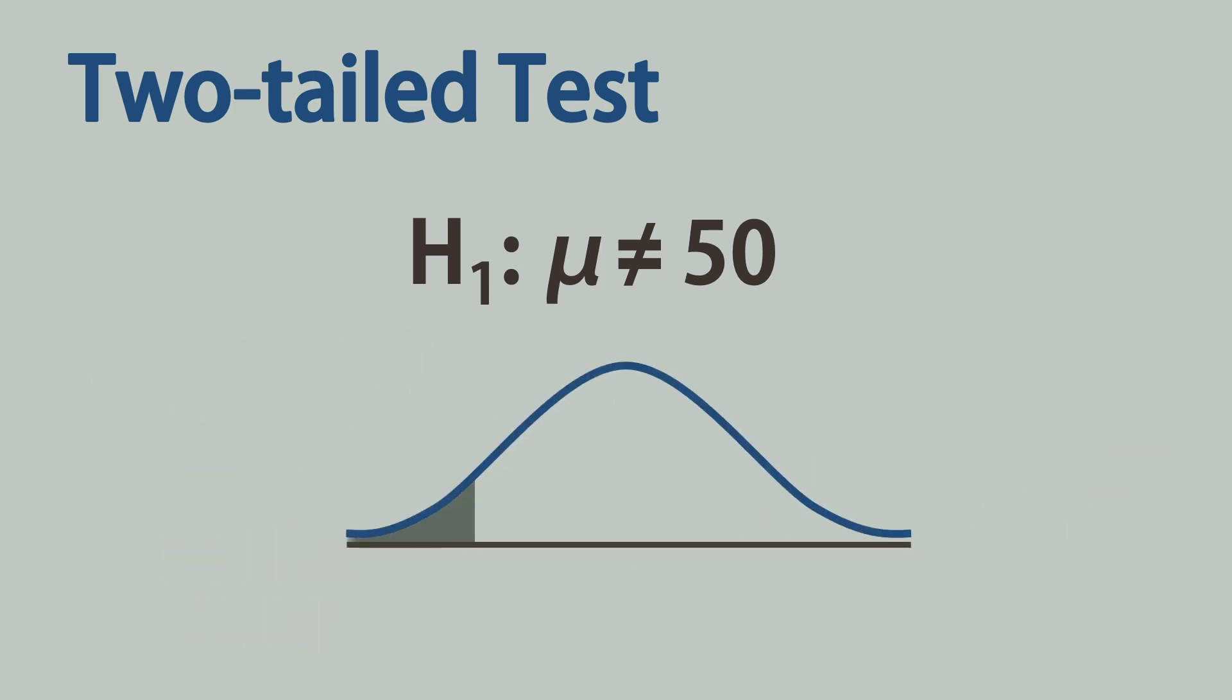Two-tailed tests usually have two critical values, one on the left and the other on the right. If the test statistic falls beyond any of them in a two-tailed test, we will reject the null hypothesis and state that the result is significant.